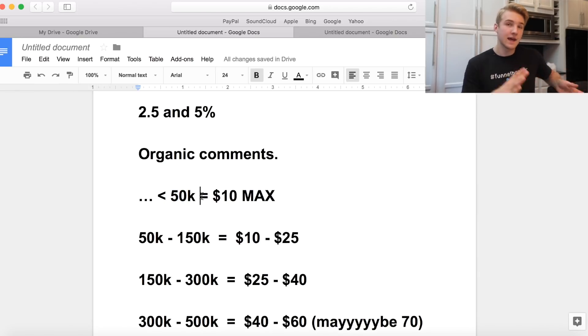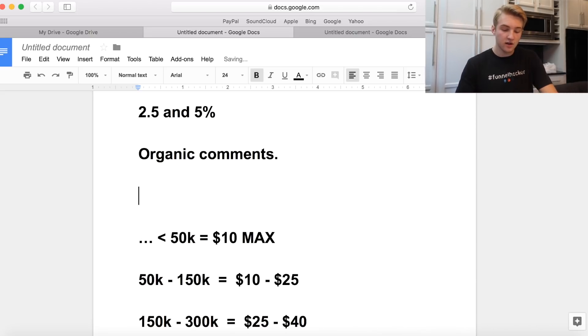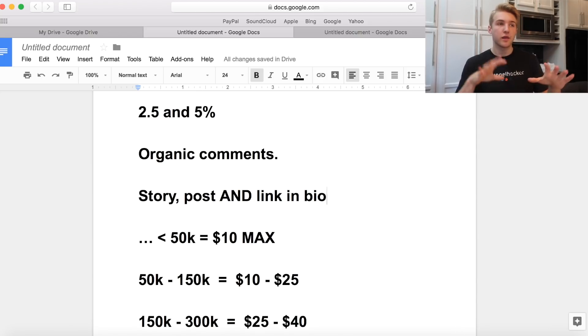I do want to mention these are all for story, post, and link in bio. I like to do all three. It works better for me. I reach a lot more people. An Instagram picture might reach a thousand people, but a story might reach three to 5,000. It doesn't necessarily overlap, so you might be reaching completely new audiences. That's why I like to do all three.